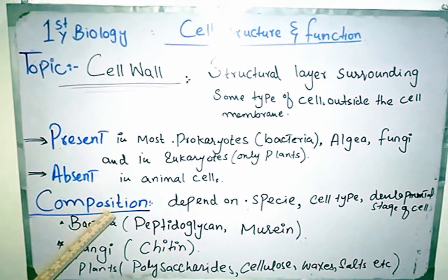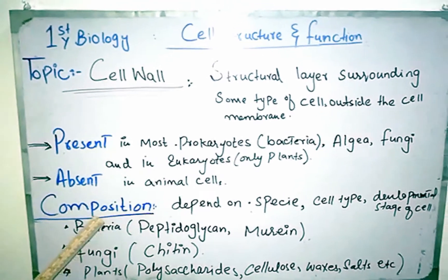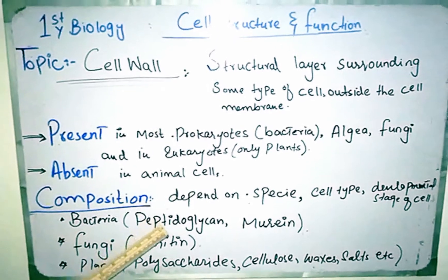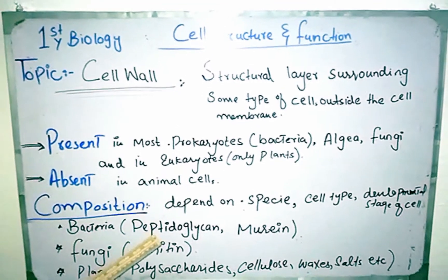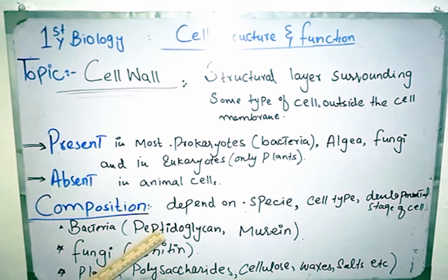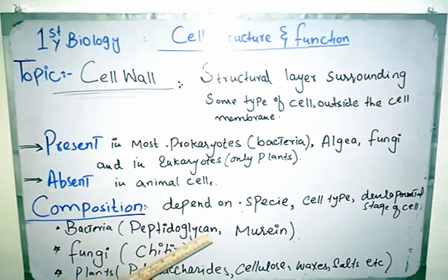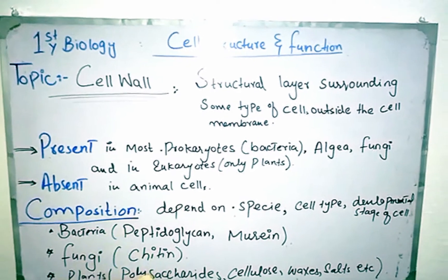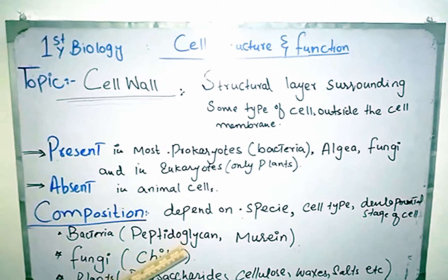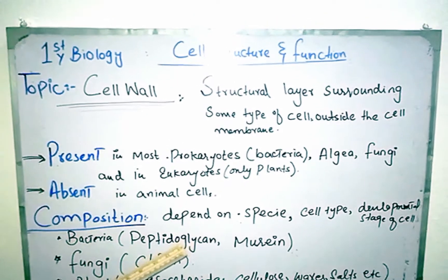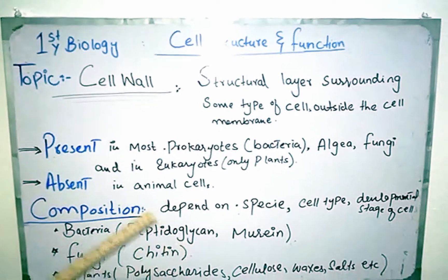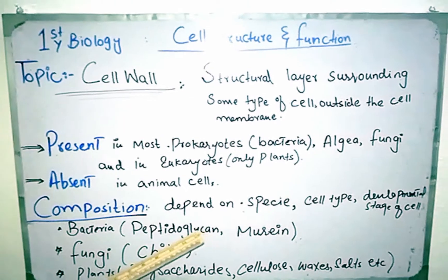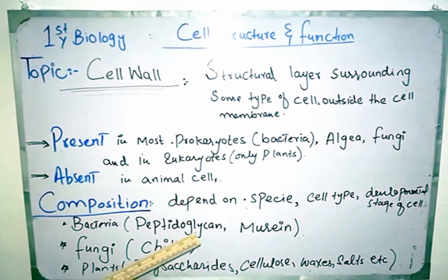Now let's discuss the composition of cell wall. The composition of the cell wall depends upon the species — meaning which type of organism it is, such as bacterial, fungal, or plant cell. It also depends upon the cell type, whether it is a conducting cell or a supporting cell, and also depends upon the developmental stage of the cell.